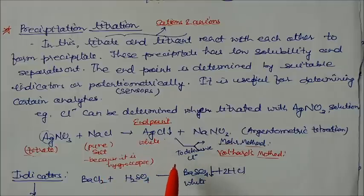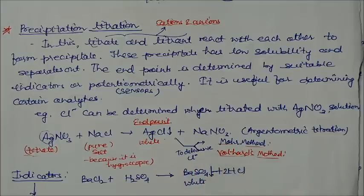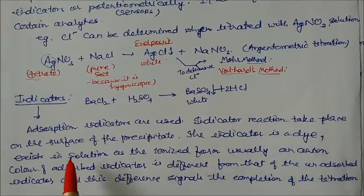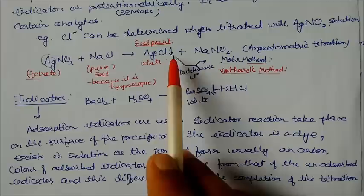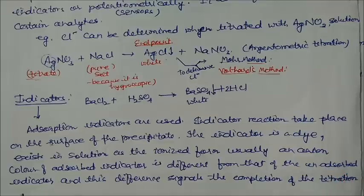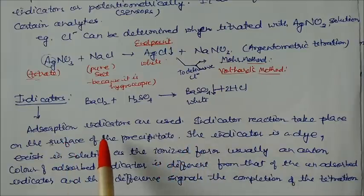Two methods to determine Cl⁻ concentration are the Mohr method and the Volhard method. In these methods, adsorption indicators are used. The indicator reaction takes place on the surface of the precipitate. The indicator is a dye existing in solution in ionized form, usually as an anion. The color of the adsorbed indicator is different from that of the unadsorbed indicator, and this color difference signals the completion of the titration.